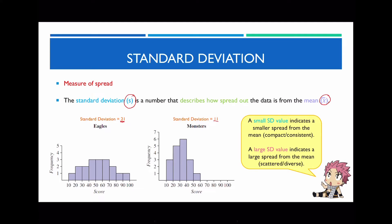A small standard deviation indicates a smaller spread from the mean, meaning that the values are a lot more concentrated — more compact and consistent. Whereas when you have a large standard deviation, this indicates a large spread from the mean and is therefore a lot more scattered, more diverse. So looking at these two values, we can clearly see that the left has a larger standard deviation compared to the data set on the right, which has a smaller standard deviation.